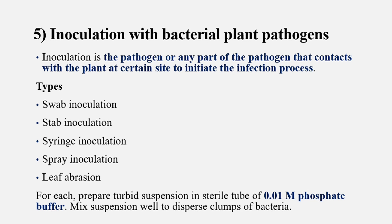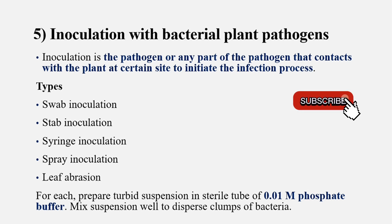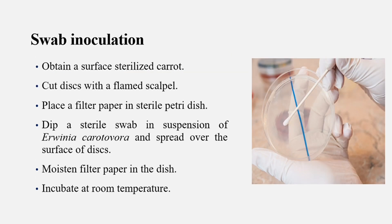Different types of inoculation include swab inoculation, stab inoculation, syringe inoculation, spray inoculation, and leaf abrasion. For every procedure, we use a suspension to which we add 0.01 molar phosphate buffer and then mix so that the bacteria clumps or clusters are dispersed.